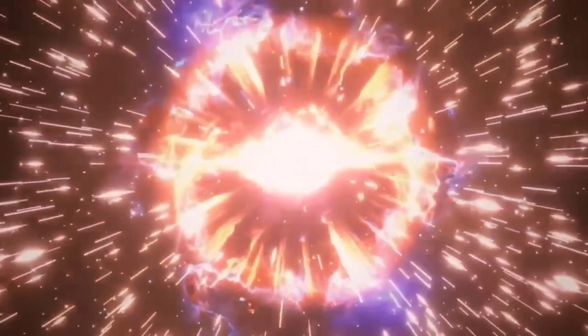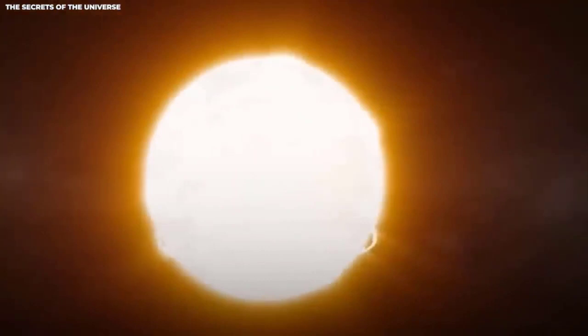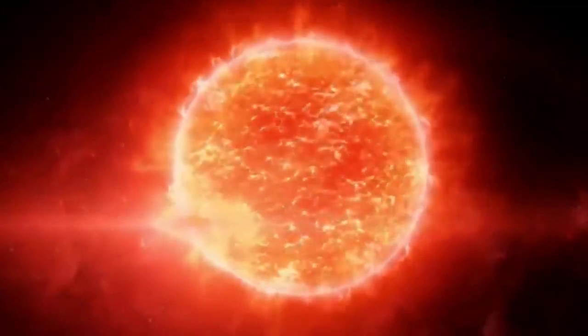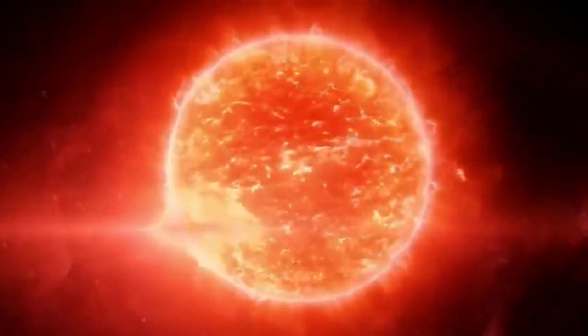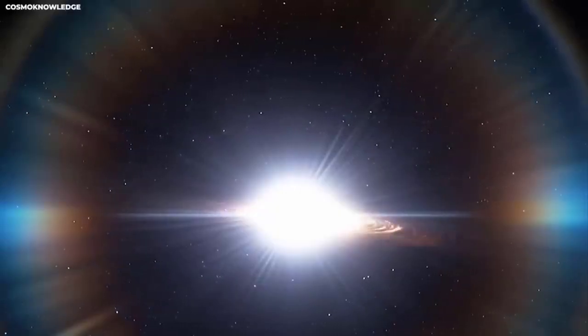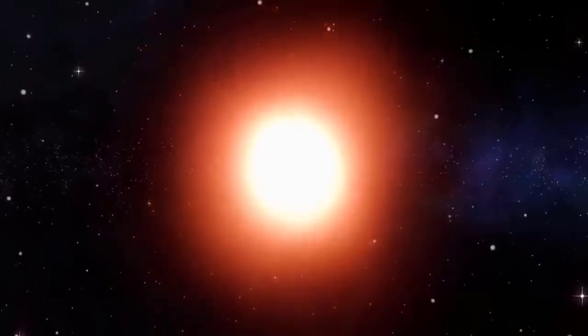Betelgeuse is believed to be merely 10 million years old, a mere fraction of our sun's age and making it 50 times younger. Despite its youth, Betelgeuse has already depleted the hydrogen fuel in its core. As a result, it finds itself in the latter stages of its existence, transitioning into the red giant phase. During this stage, it utilizes helium to produce carbon through fusion processes.